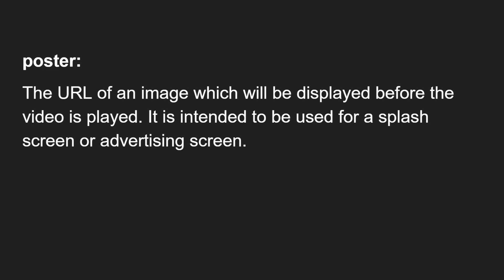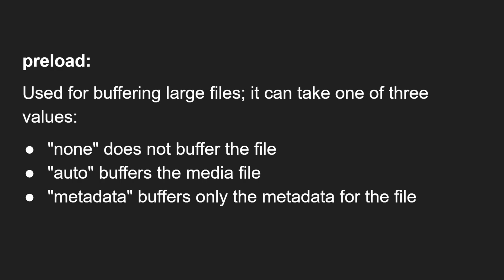The poster attribute takes the URL of an image which will be displayed before the video is played. It takes a relative URL or absolute file path. Before the video starts playing, it will show a thumbnail — similar to how YouTube shows thumbnails. It is intended for use as a splash screen or advertising screen. The last attribute is preload, used for buffering large files. It takes one of three options: none (the video will not be buffered), auto (it will buffer the media file), or metadata (it will only buffer the metadata for the file).